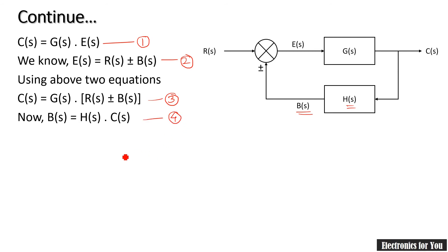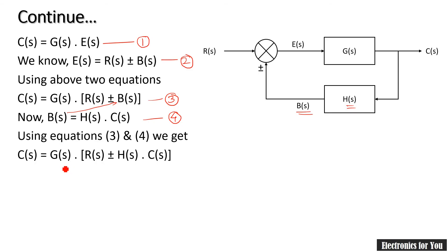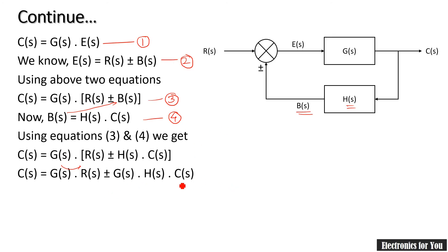Using equations 3 and 4, we substitute B(S) into the expression. We multiply the bracket by G(S) and after simplifying we get an equation where C(S) appears on both sides — one C(S) on the left and one C(S) on the right with R(S).